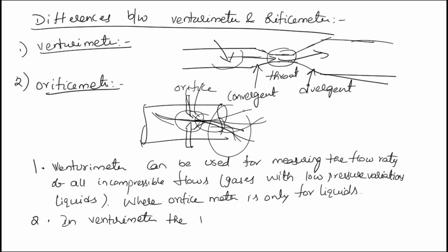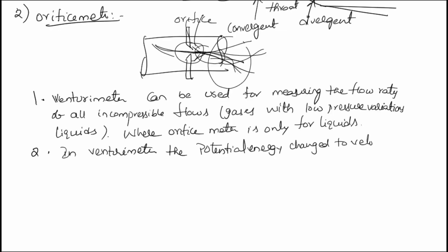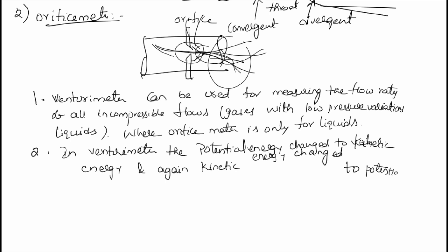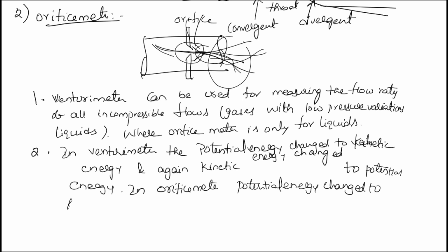To summarize the second difference: in the venturimeter, potential energy changes to kinetic energy, and then kinetic energy changes back to potential energy. In the orifice meter, potential energy changes to kinetic energy only — there is no conversion back to potential energy again.